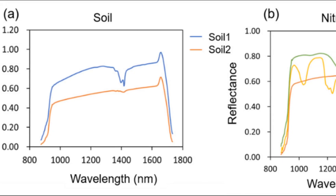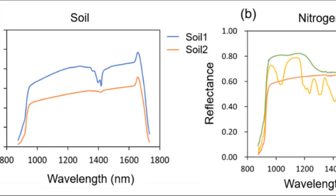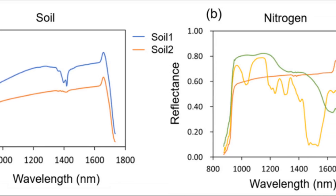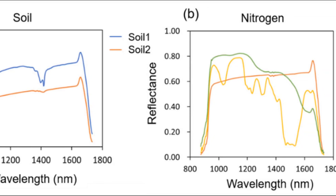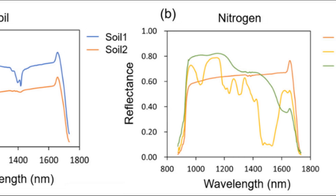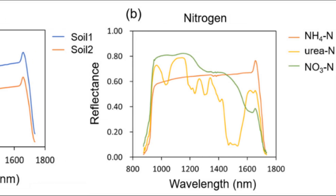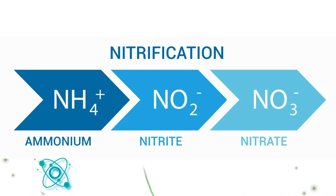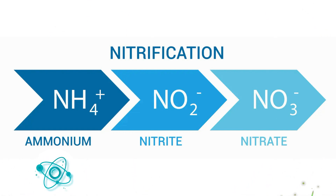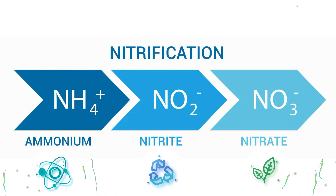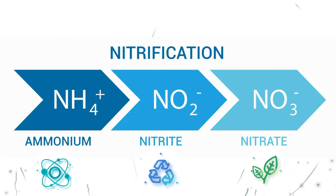Proper fertilization should be based on soil resources but also take into account the needs of plants. Nitrogen fertilizers contain various forms of nitrogen, but nitrates are directly absorbable by plants. The ammonium or amide form must undergo changes under the influence of soil microorganisms — nitrification must occur, so appropriate microorganisms must also be introduced.